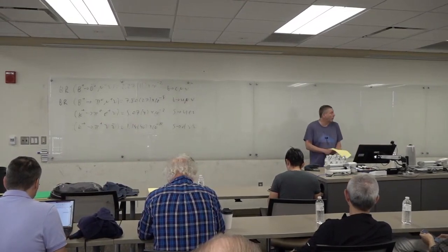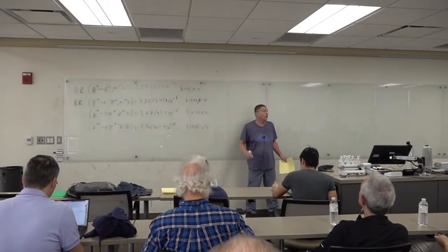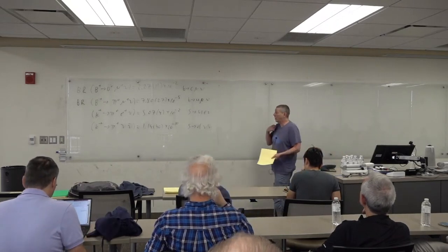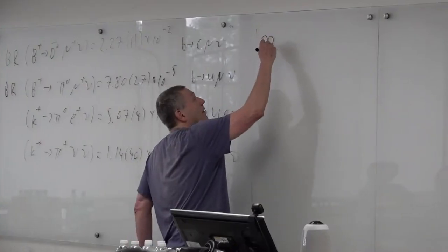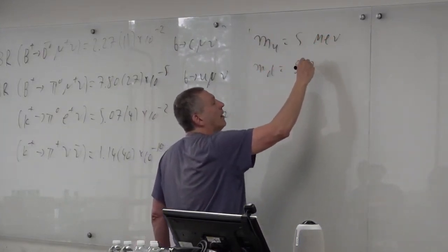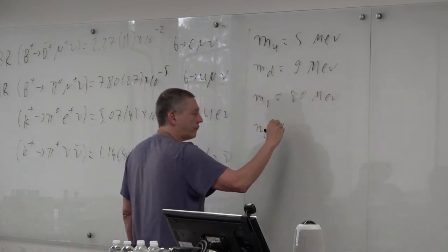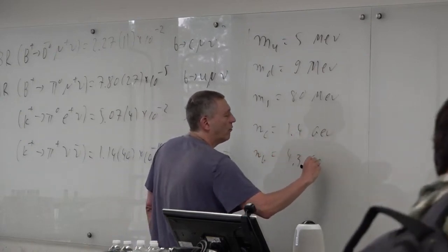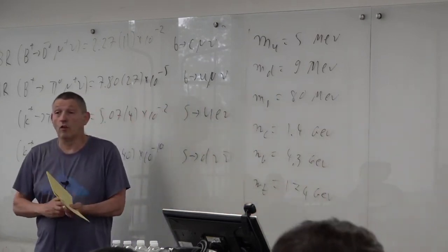What I showed you last time was that the CKM matrix, which is the only matrix that violates flavor, is very close to the unit matrix — it's not generic, it doesn't have to be. I also neglected to mention that the quark masses are far from generic. Let me write the quark masses now: m_u ≈ 5 MeV, m_d ≈ 9 MeV, m_s ≈ 80 MeV, m_charm ≈ 1.5 GeV, m_b ≈ 4.3 GeV, and m_top ≈ 174 GeV.